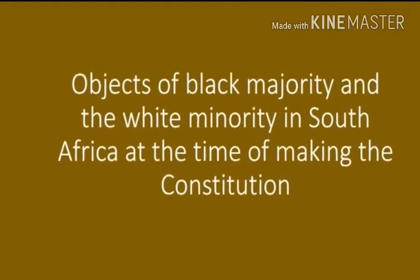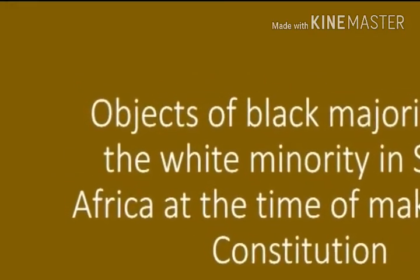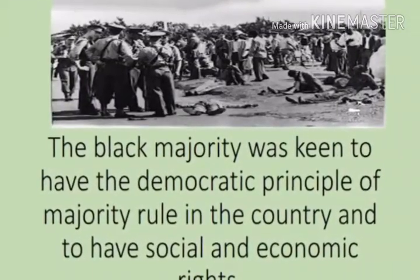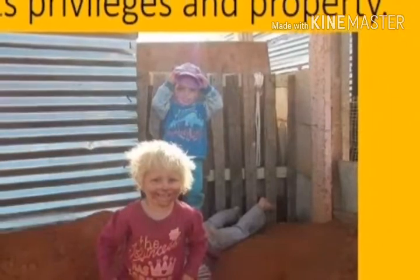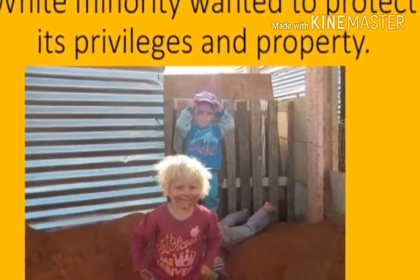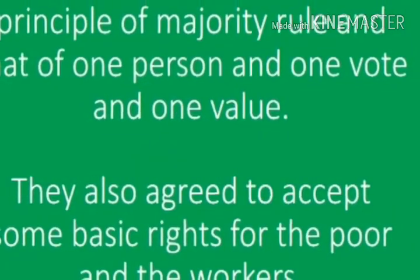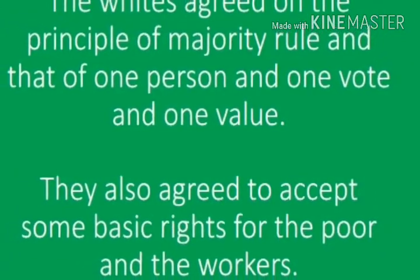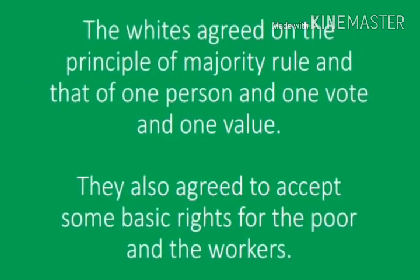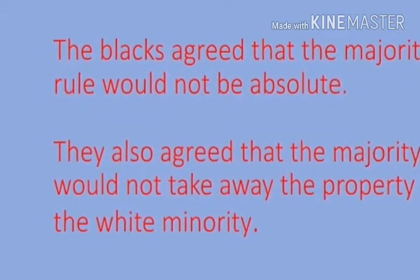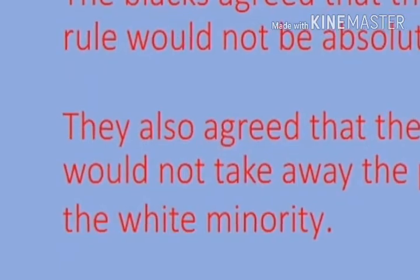There were differing objectives of the black majority and the white minority in South Africa at the time of making the constitution. The black majority was keen to have the democratic principle of majority rule and to have social and economic rights. The white minority wanted to protect its privileges and property. A compromise was reached: the whites agreed to the principle of majority rule and one person, one vote, one value, and to accept some basic rights for the poor and the workers. The blacks agreed that majority rule would not be absolute and that the majority would not take away the property of the white minority.